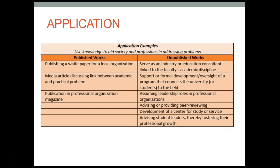Looking at published versus unpublished works relevant to the application domain: published works can include white papers for local organizations, articles discussing the link between academic and practical problems, or publications in a professional organization magazine. Unpublished works can also serve to promote scholarship, and these can include serving as an industry expert, looking at development or oversight for problems that connect universities to the field, advising, providing peer reviews, or advising student leaders by promoting their professional growth.